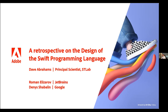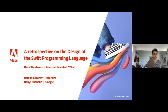After this talk there will be a discussion with Roman Elizarov, the lead developer of the Kotlin programming language at JetBrains, and Dennis Shabalin, a researcher at Google working on machine learning. The format will be a 30-to-40-minute presentation from Dave followed by audience discussion. Questions from Zoom and Discord will be forwarded to Dave as we go along.